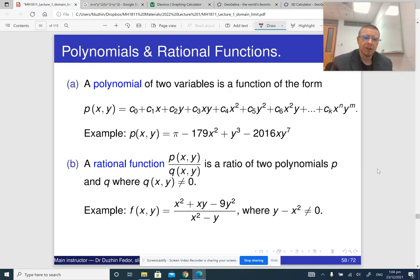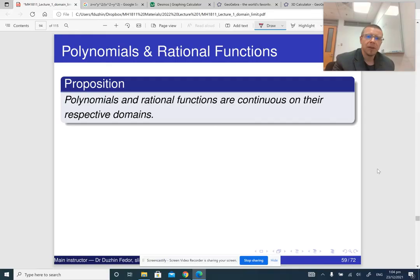So a rational function is a ratio of two polynomials. And if you look at limit laws carefully, you will see that the sum law, the product law and the ratio law, essentially the limit laws tell us that polynomials and rational functions are continuous on their respective domains.